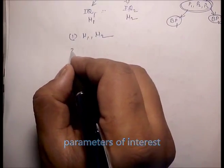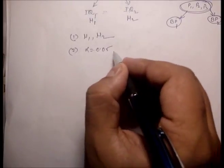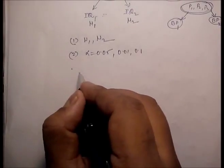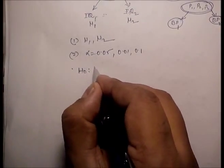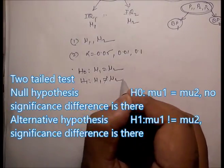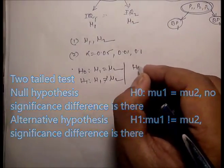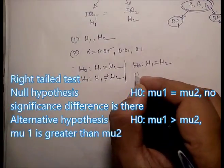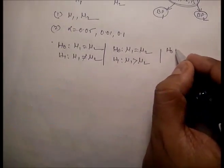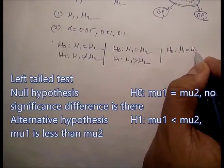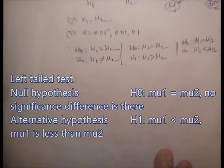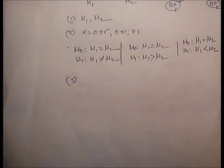The level of significance is 0.05, 0.01, or 0.1. For the two-tail test: H0 is mu1 equals mu2, alternative is mu1 not equal to mu2. For the right-tail test: H0 is mu1 equals mu2, alternative is mu1 greater than mu2. For the left-tail test: H0 is mu1 equals mu2, alternative is mu1 less than mu2.